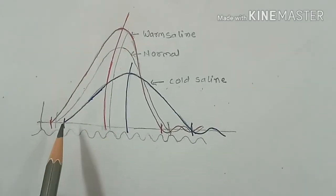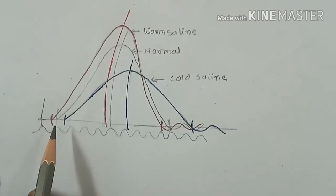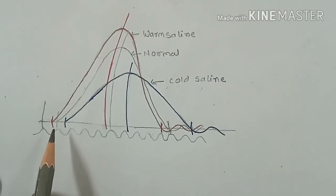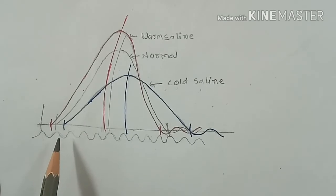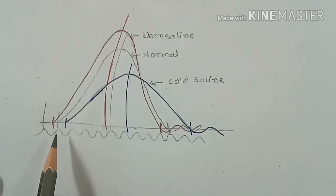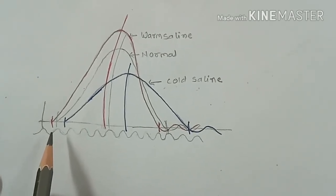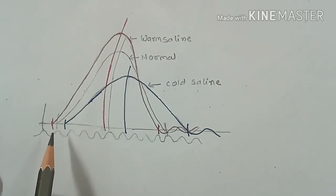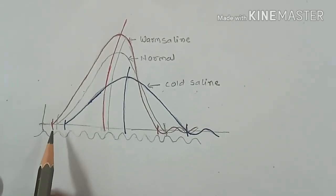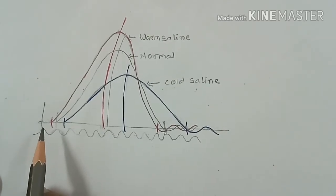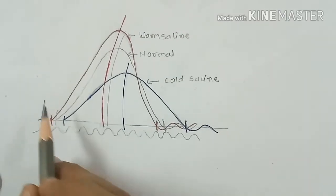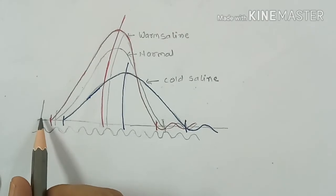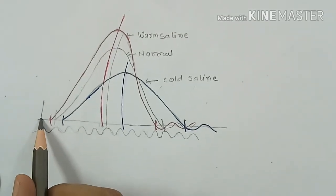When we immerse muscle in very hot ringer solution, above 42 degrees Celsius, muscle remains in a state of sustained contraction which is known as heat rigor, and it is due to denaturation of muscle proteins. You will get this kind of curve when we immerse muscle in very hot saline.